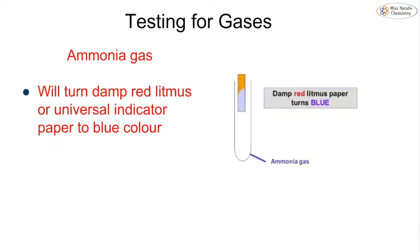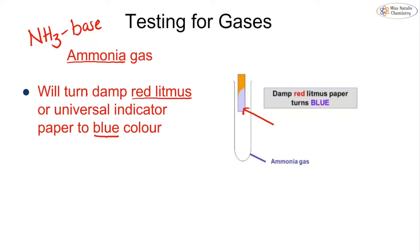The last gas we need to know about is ammonia, NH3. Ammonia is a base, and what it will do is turn red litmus paper to a blue colour. You can see that the litmus paper has turned blue, and that tells us that the gas in the test tube is ammonia.